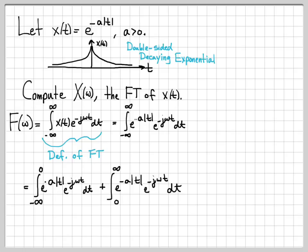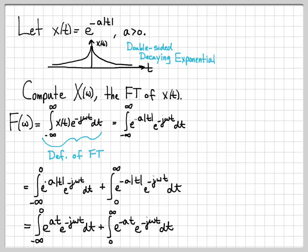In the first integral, e^(-a|t|) is integrated over negative times only. When we plug a negative t into the absolute value sign, we always get a positive value, so we write it as e^(at). In the second integral from 0 to infinity, every value of t is positive, so the absolute value just gives t directly, resulting in e^(-at). Now we have the absolute value simplified in both integrals.